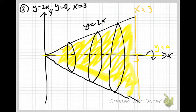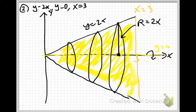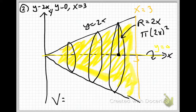We want to get the area of one of these circles, so we'll get the radius. We go out from the center up to the top of the circle — we started at 2x and go down to 0 — so that radius is 2x. The area of one circle is π times (2x)², so the volume would be the integral from 0 to 3 of 4x² dx.